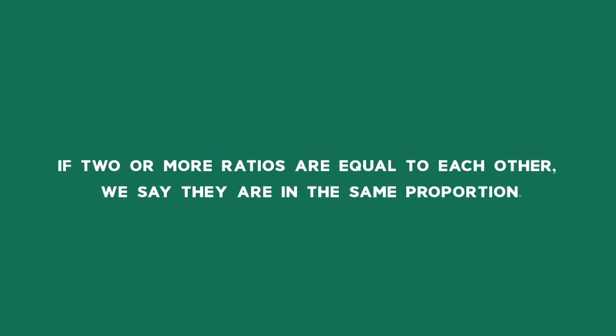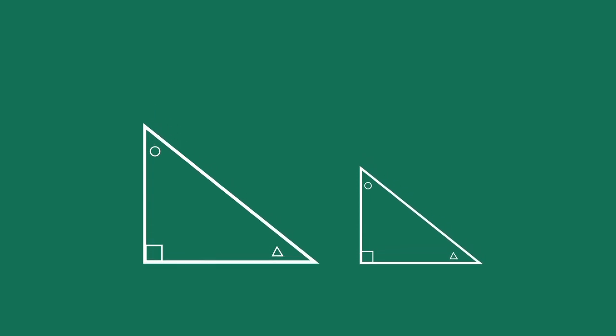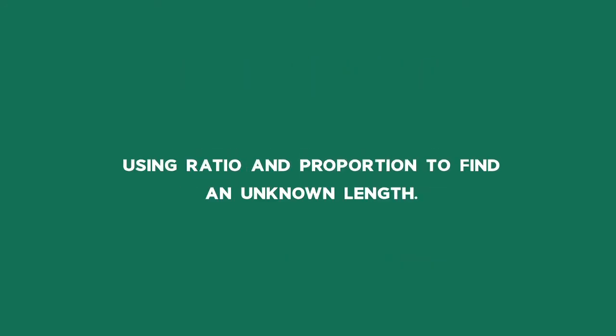If two or more ratios are equal to each other, we say that they are in the same proportion. Proportionality describes the equality of ratios. When shapes are in proportion, the corresponding angles are equal and corresponding sides are in proportion. We say the shapes are similar. Example, using ratio and proportion to find an unknown length.